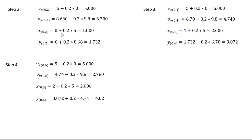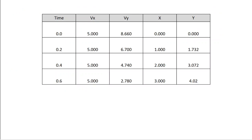X(0.2) equals X(0) plus 0.2 times Vx(0), which is 0 plus 0.2 times 5, giving x(0.2) equals 1. And y(0.2) equals y(0) plus 0.2 times Vy(0), which is 0 plus 0.2 times 8.66, giving 1.732. You keep repeating this to find position and velocity at 0.4 and then at 0.6. A table is made with all these values. Since acceleration along the x-direction is 0, you have constant velocity, so the change in x-position is uniform, while the y-values change according to the Euler equation.